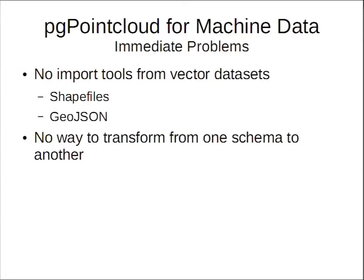Then I hit another problem: there were no import tools for vector datasets. I couldn't take a shapefile or a GeoJSON file and bring it in. The bigger problem was that I'm taking datasets from a variety of different sources with totally different equipment — everything is different across the board. There was no way to transform or normalize all of it from whatever schemas they're in to one common schema.